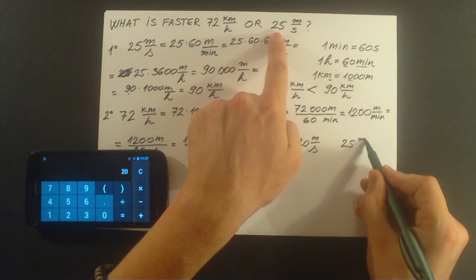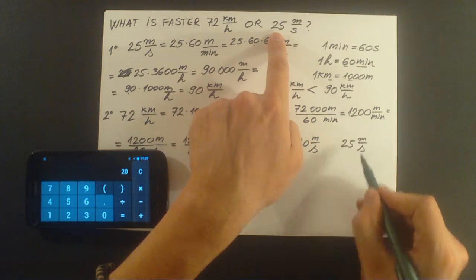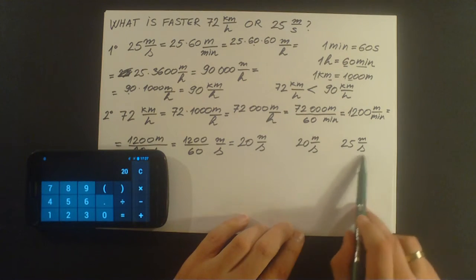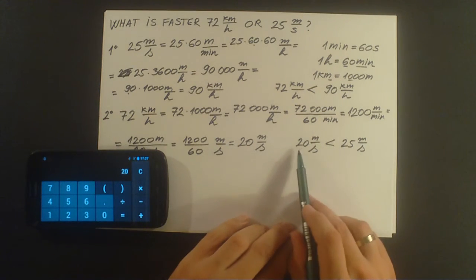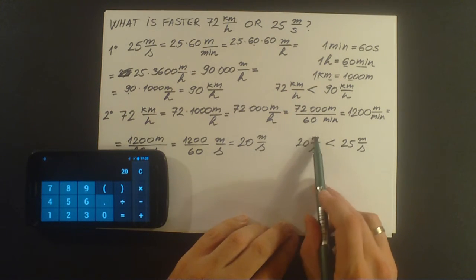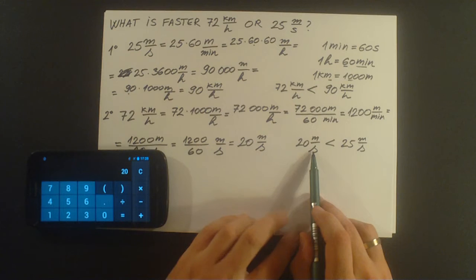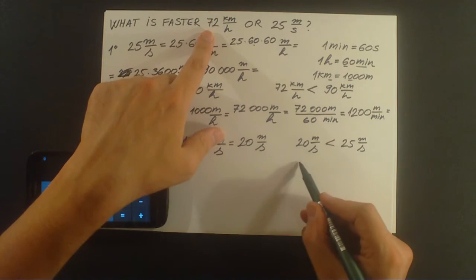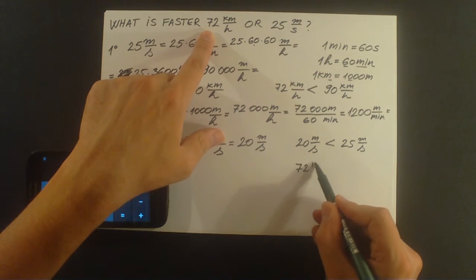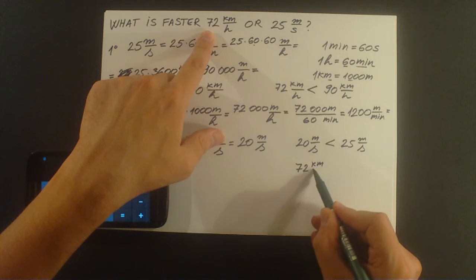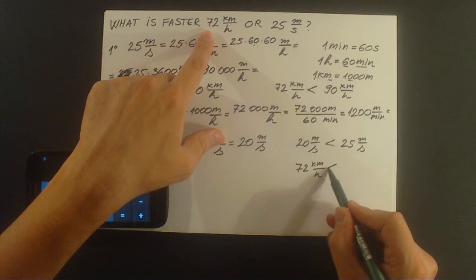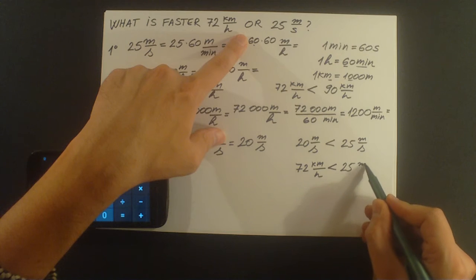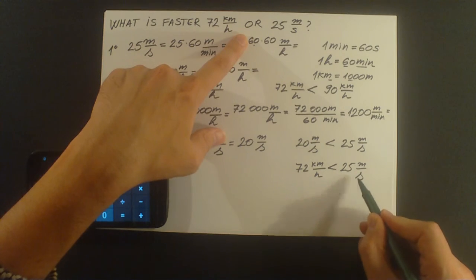So which one is larger: 20 meters per second or 25 meters per second? Of course 25 meters per second is larger than 20 meters per second, and that means 72 kilometers per hour is less than 25 meters per second.